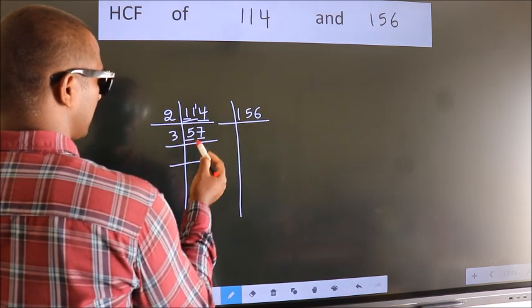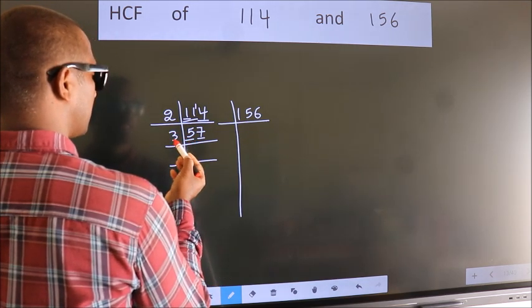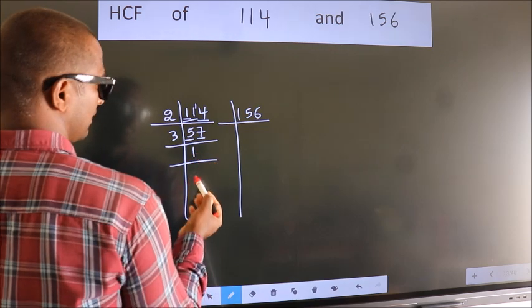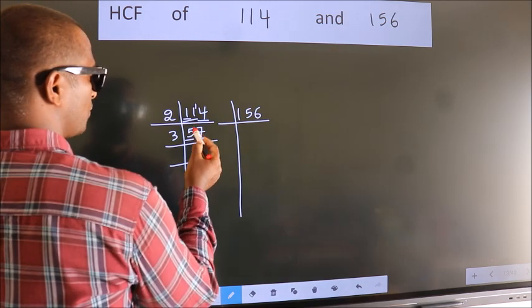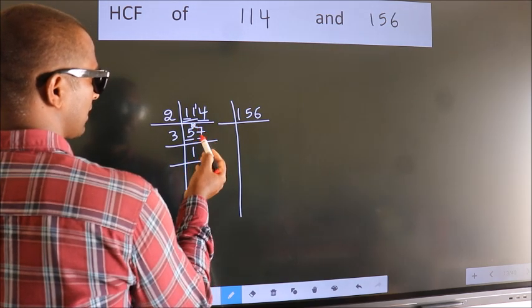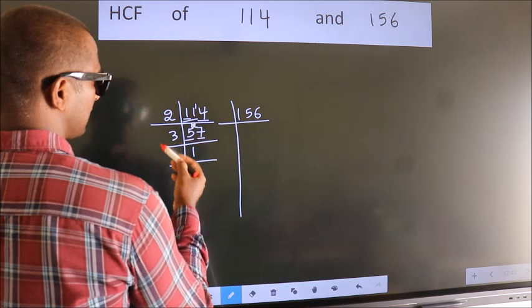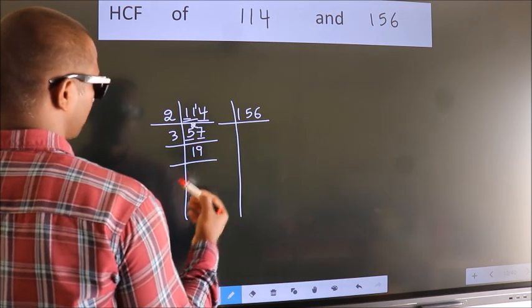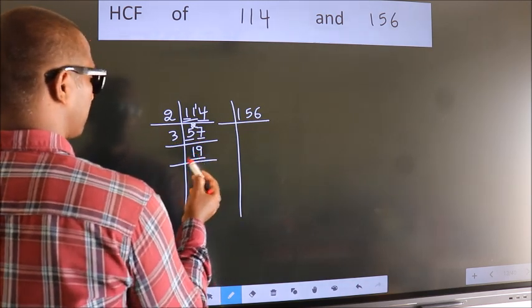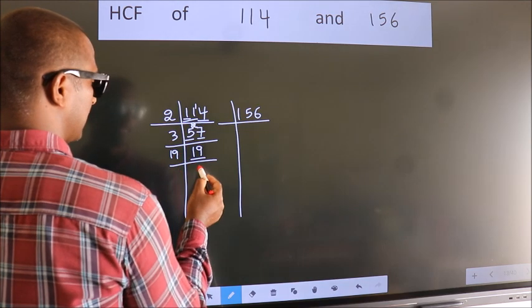First number 5. A number close to 5 in 3 table is 3 once 3. 5 minus 3, 2, 2 carried forward 27. When do we get 27 in 3 table? 3 nines 27. Now, 19 is a prime number. So 19 once 19.